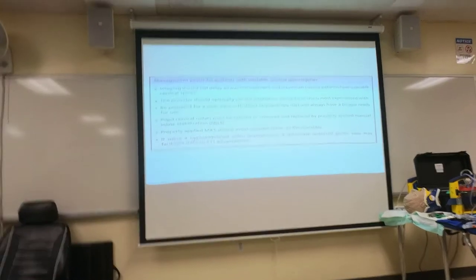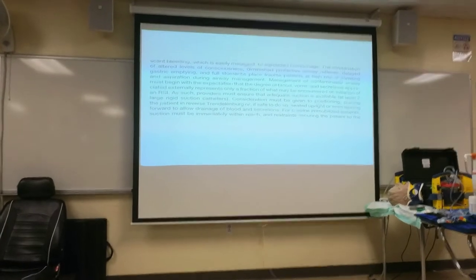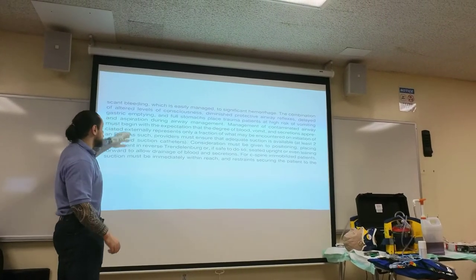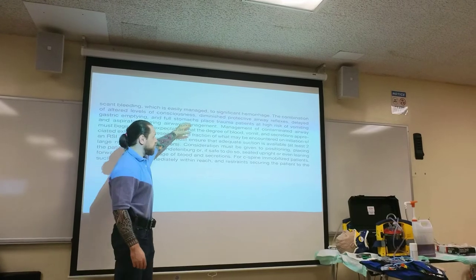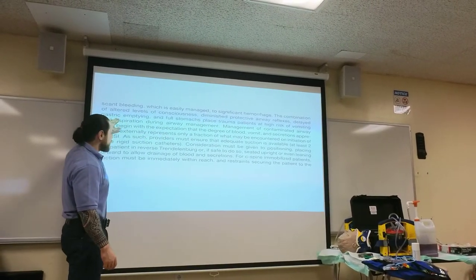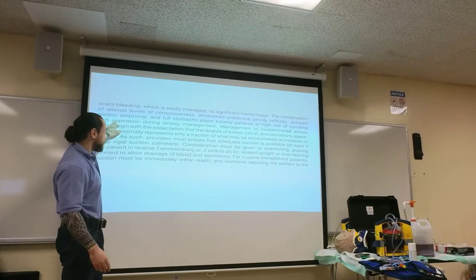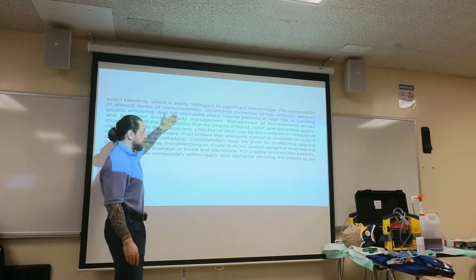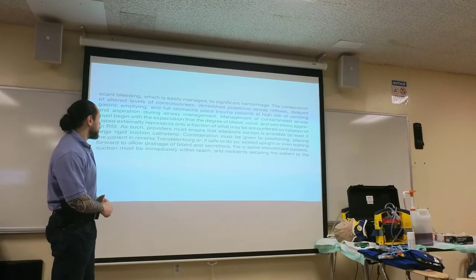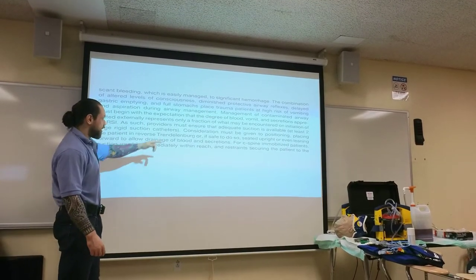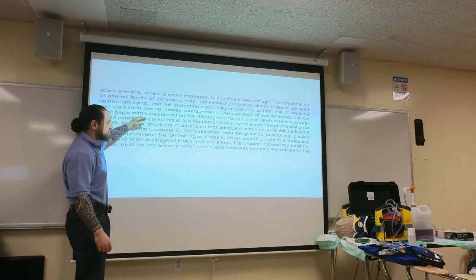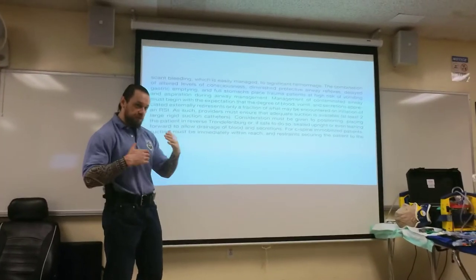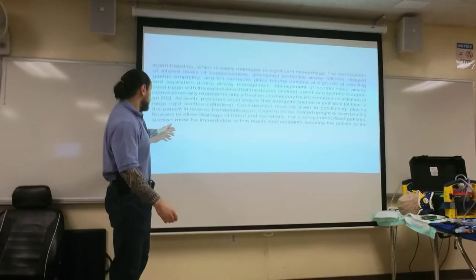Now let's talk about the vomit and blood contaminated airway. Why is it so difficult? The patient is in trauma, they have AMS or altered level of consciousness, diminished protective airway reflexes, delayed gastric emptying, probably BLS pumped a lot of air in already, they may have a full stomach, and there's a high risk of vomiting and aspiration — so we need to control the airway. Management of a contaminated airway must begin with the expectation that the blood you're seeing is a small amount of what's to come — if you see some blood and vomit, expect way more to come.